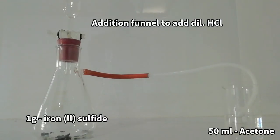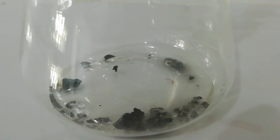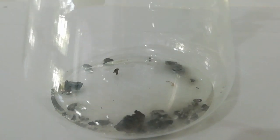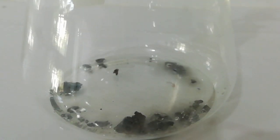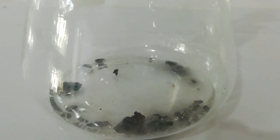Now using this apparatus, I am going to make hydrogen sulfide gas. Hydrogen sulfide is soluble in acetone, therefore the generated gas is bubbled in acetone. Here, 1 gram of iron sulfide was placed in the flask.